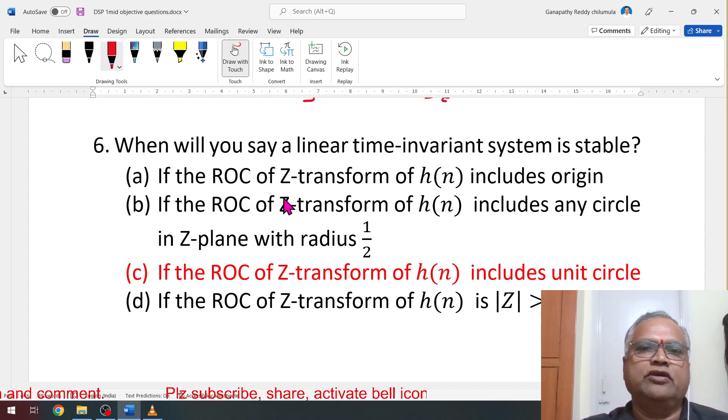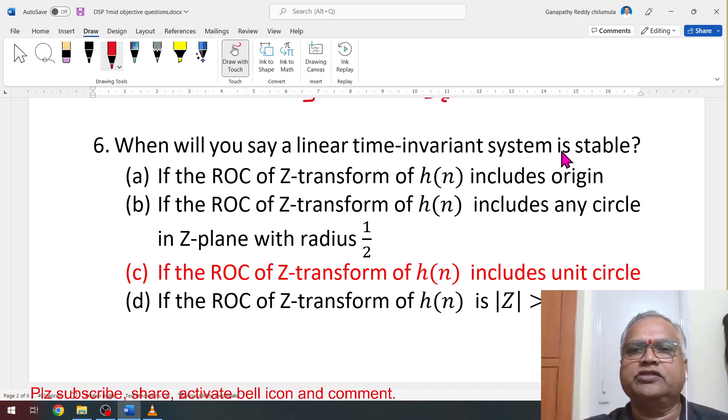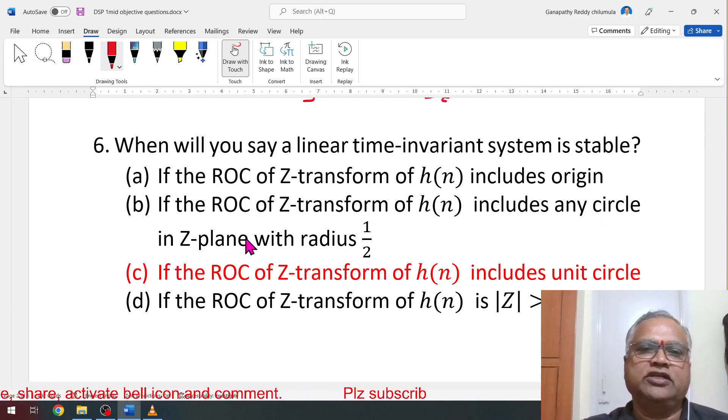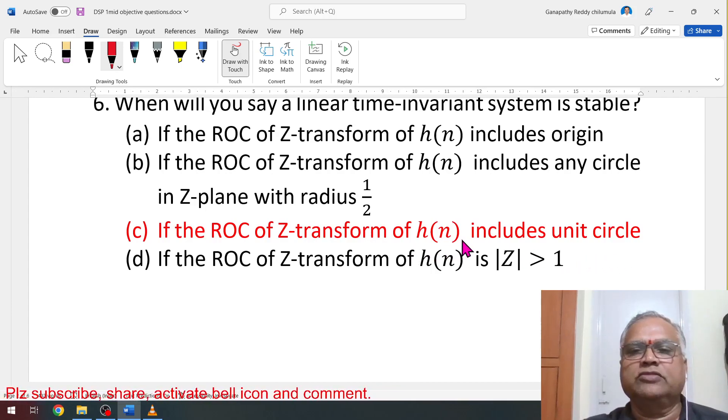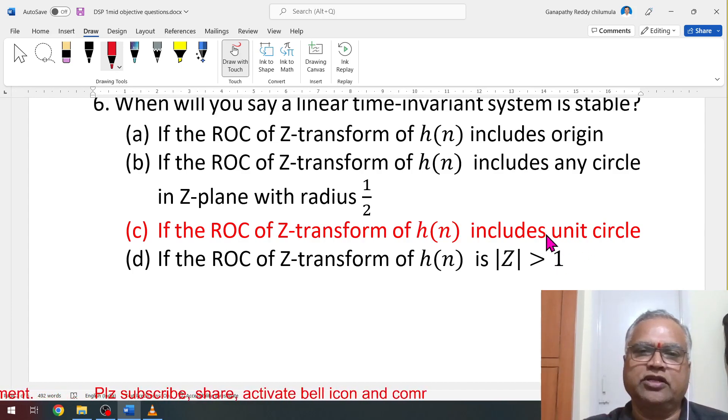When will you say linear time-invariant system is stable? Stability. We solved one problem earlier. If ROC of Z-transform of H(n) includes origin: wrong. If the ROC of Z-transform of H(n) includes any circle in Z plane with radius: if the ROC of Z-transform of H(n) includes unit circle. Always any stable system, it will give a bounded response that is possible only if ROC covers unit circle. That unit circle should be present in the region of convergence, then system is stable, otherwise no. C bit is correct.